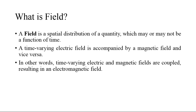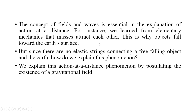The concept of fields and waves is essential in explaining action at a distance. For instance, we learn from elementary mechanics that masses attract each other — this is why objects fall towards the earth's surface. But since there are no elastic strings connecting a free-falling object and the earth, how do we explain this phenomenon? We explain it by postulating the existence of a gravitational field. Due to this gravitational field, the action-at-a-distance law causes objects to fall towards the earth's surface.